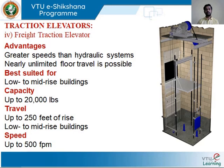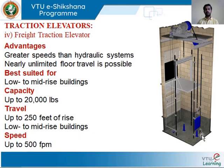The last traction typology is the freight traction elevator, where the entire system is within the shaft and the driving sheave is on top. Major advantages include greater speed than hydraulic systems and unlimited floor travel. It is best suited for low and mid rise buildings. You would also notice in every picture the buffer — the blue colored component. There is a buffer for the lift car and a buffer for the counterweight. When the car goes up the counterweight comes down, and the buffer prevents it from hitting the ground, and vice versa.